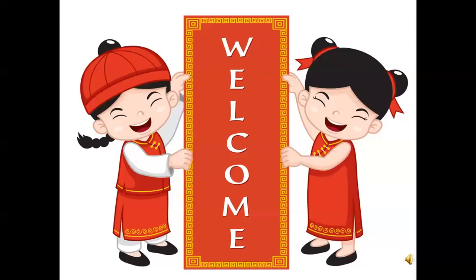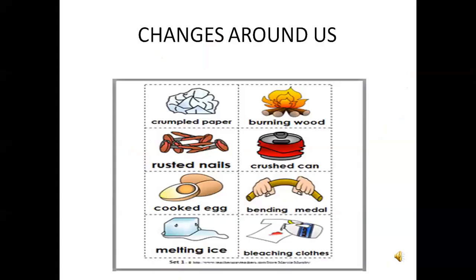Hello children, welcome back to the science class. We have already completed two units in this session. We are going to see about changes around us. Changes take place around us all the time. See these pictures: crumbled paper, burning wood, rusted nails, cooked egg, bending metal, melting ice, and bleaching cloths. These are happening every day around us.